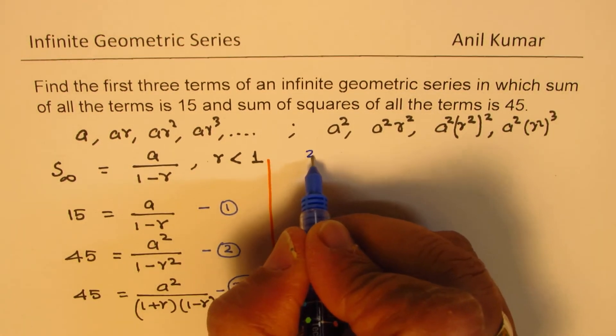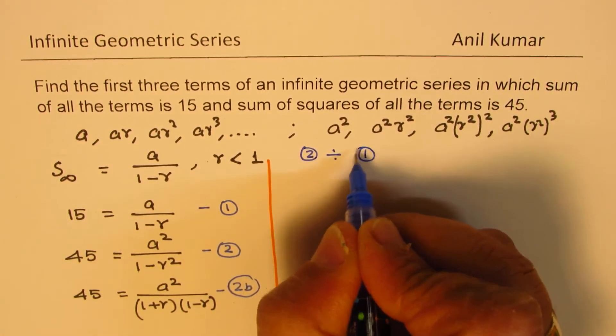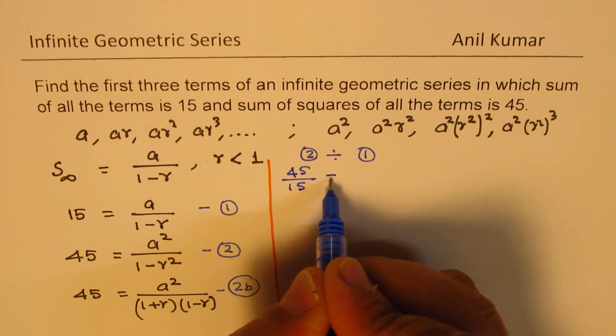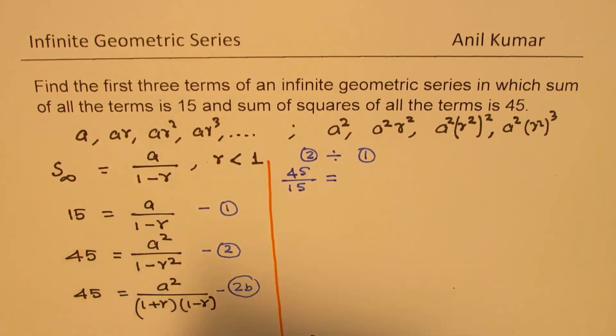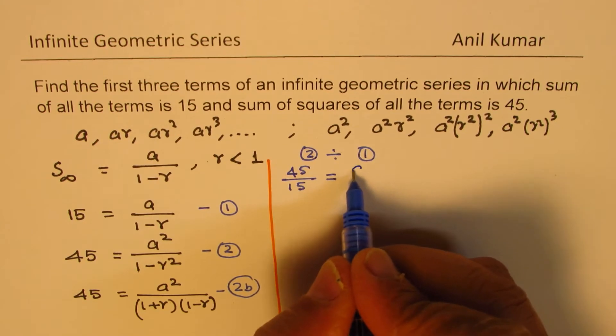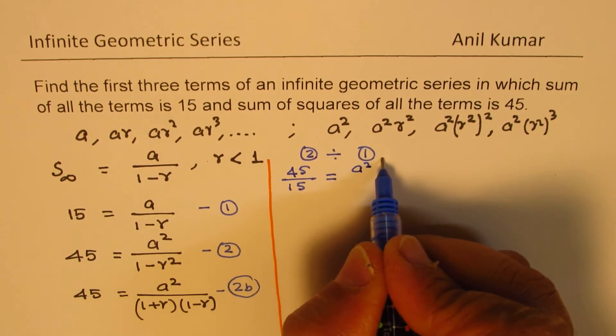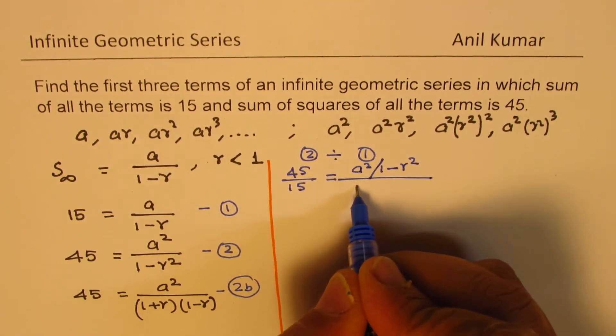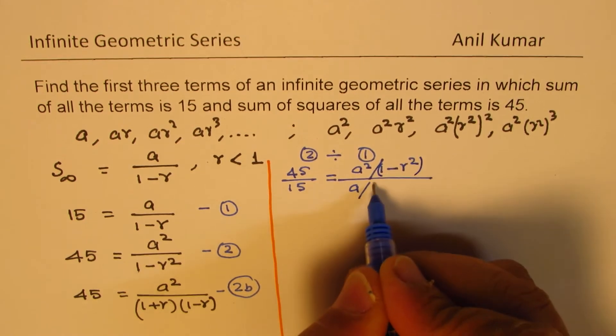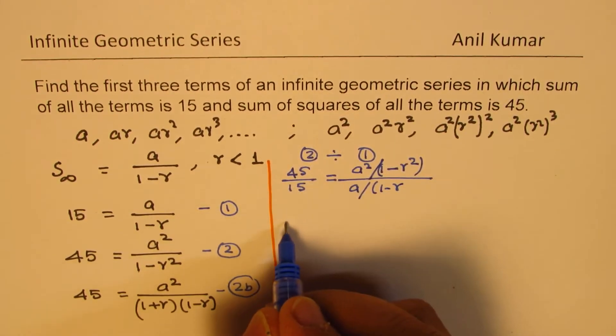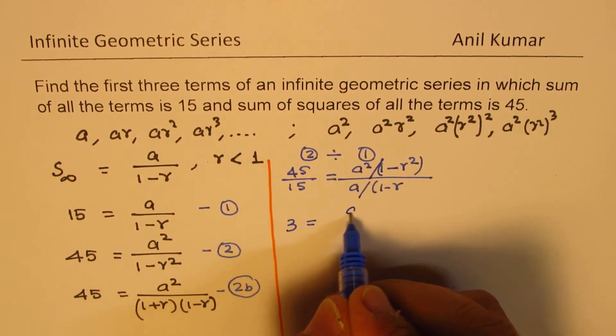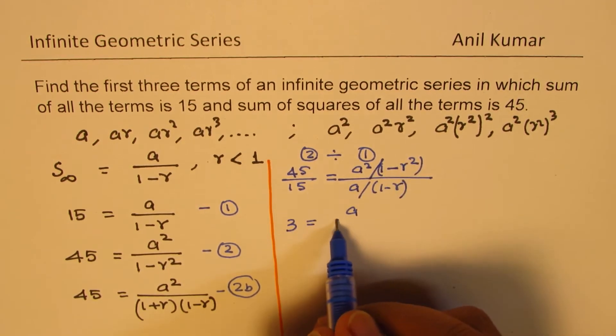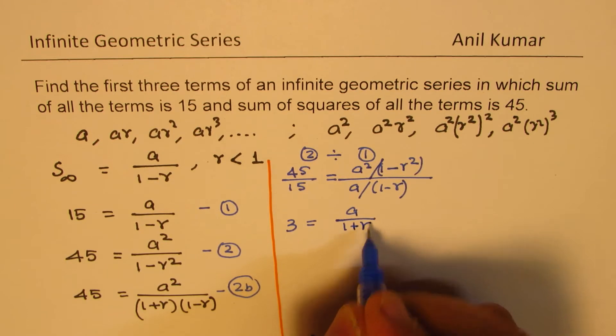If I divide equation 2 by equation 1, in that case, what do we get? We get 45 over 15 equals 3. A square divided by 1 minus R square, and A divided by 1 minus R. A and A cancels, so we get A. And here, 1 minus R cancels. We get 1 plus R. So we get A over 1 plus R.